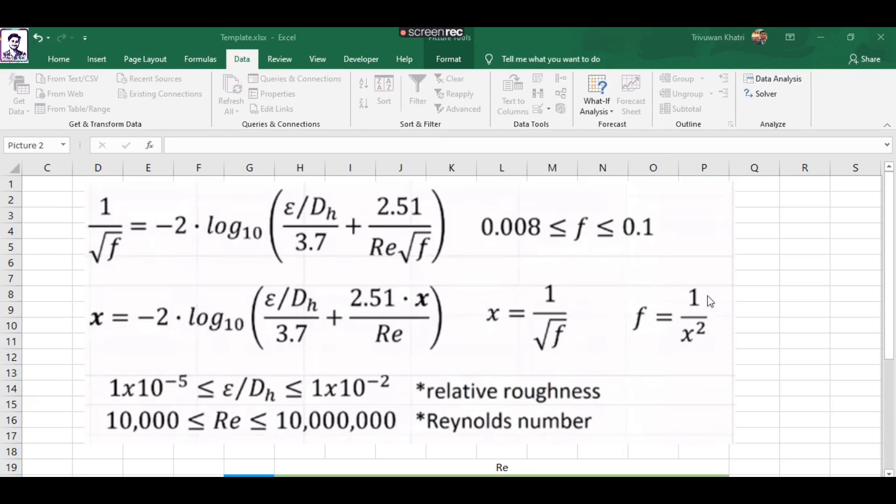This is a Colebrook equation. It's the relation between F (epsilon/Dh) and Reynolds number. F here is the representation of pipe friction coefficient, and epsilon/Dh is what we call relative roughness.